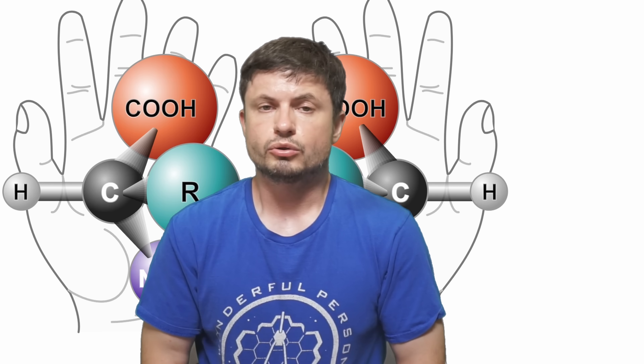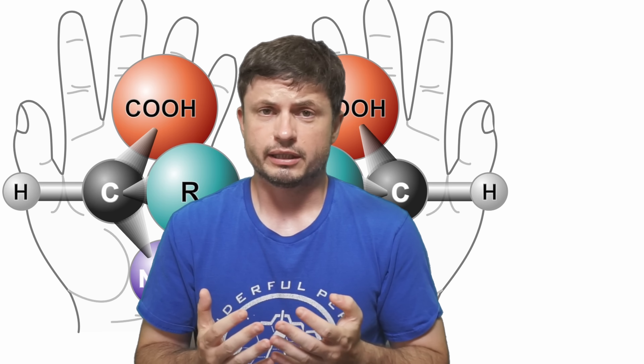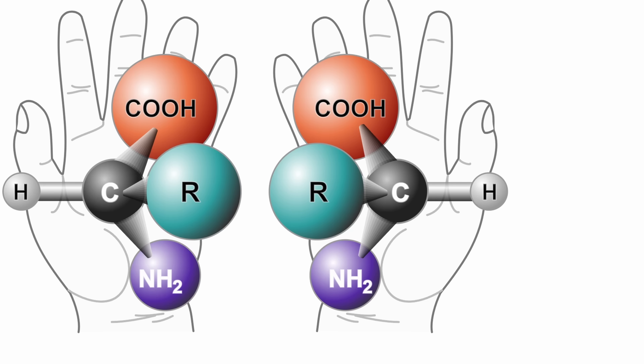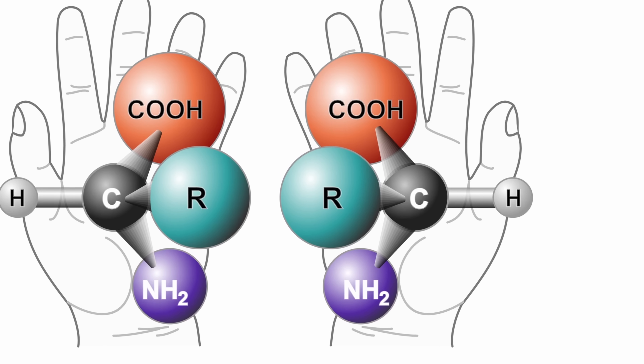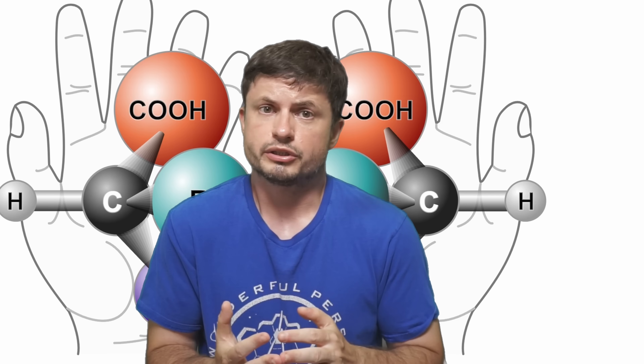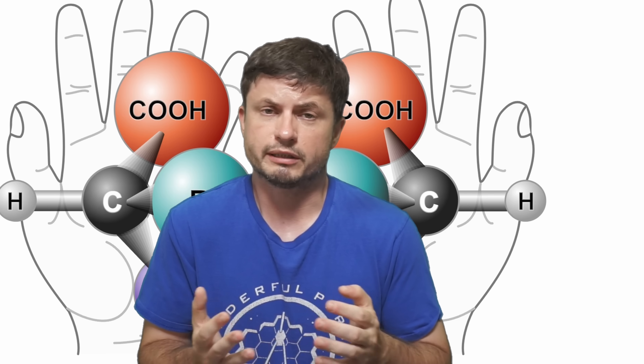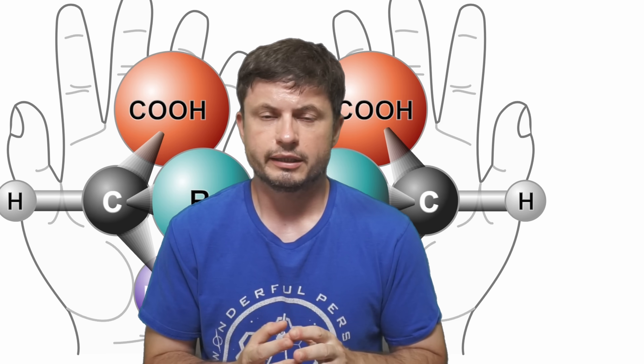Today we're going to discuss yet another potential resolution to a relatively major mystery when it comes to the origin of life — the mystery of what's known as chirality, also known as handedness. This image explains it pretty well. Pretty much everything in nature is either left-handed or right-handed, and we're not just talking about people and animals. Here we're talking about proteins, sugars, amino acids, and even certain molecules.